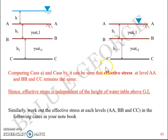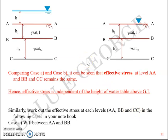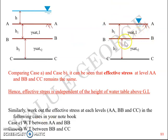However, it may have an effect on effective stress when the water table fluctuates within the ground level. To understand that, you will need to work out the effective stress at each level in the following cases as an assignment: Case C — water table between levels AA and BB; and the next case — water table between BB and CC.